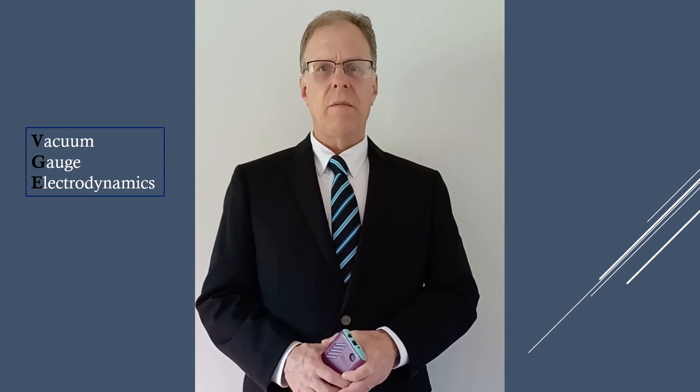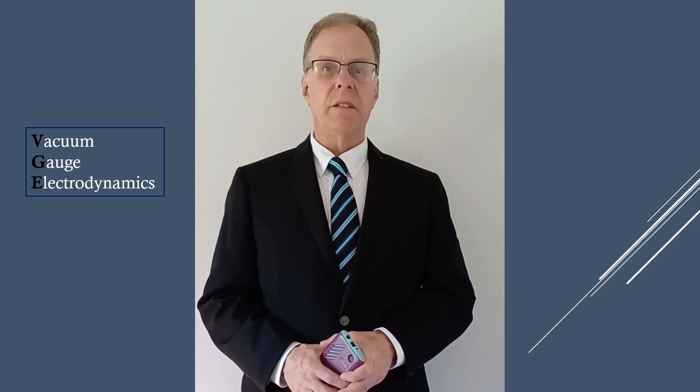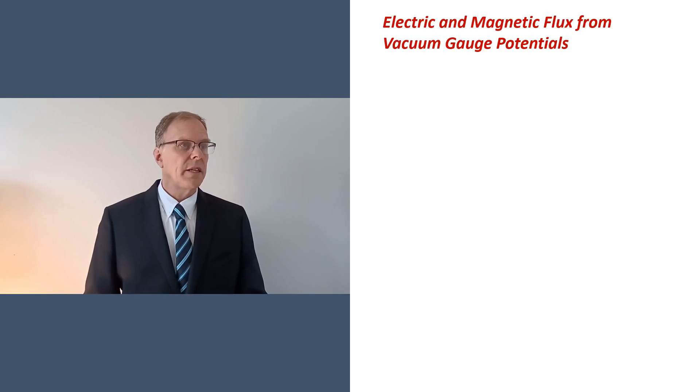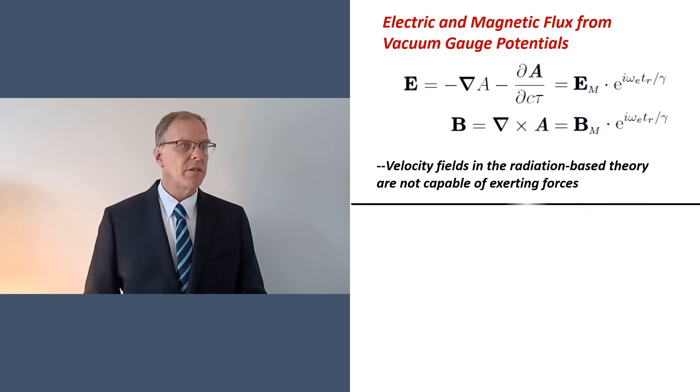Now that vacuum gauge potentials have been introduced for the classical electron, let's see how these potentials can be used to determine the momentum flux velocity fields. To begin, let's differentiate the potentials in the conventional way using these familiar formulas. If you do this, you'll get electric and magnetic Maxwell fields, except that each field will inherit the high frequency oscillations of the potentials. These fields are not capable of exerting forces anymore.